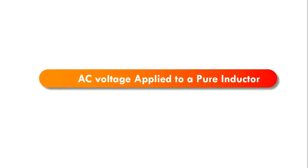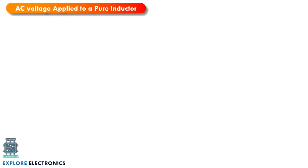In this video, let us understand AC voltage applied to a pure inductor. In the previous video, I explained AC voltage applied to a pure resistor. Now let us consider the pure inductor circuit. Let me draw an inductor with a coil representation where we are applying an AC signal. Let us consider L as the inductance of the pure inductor.